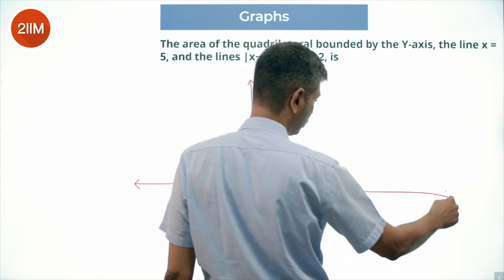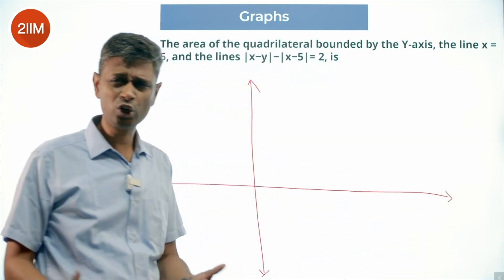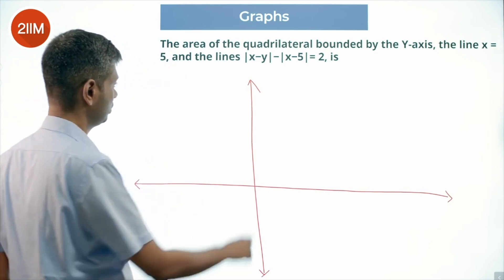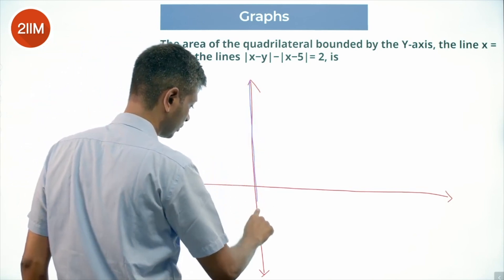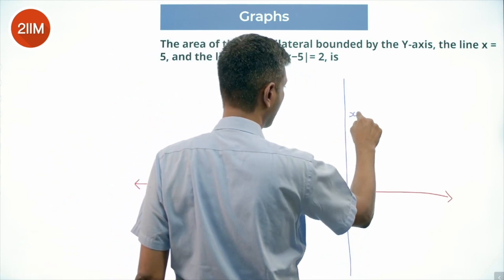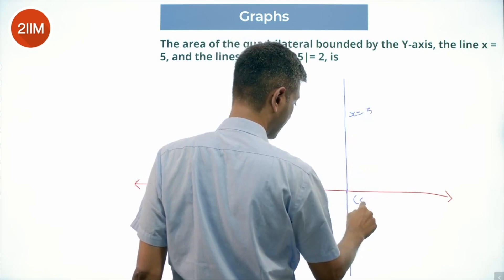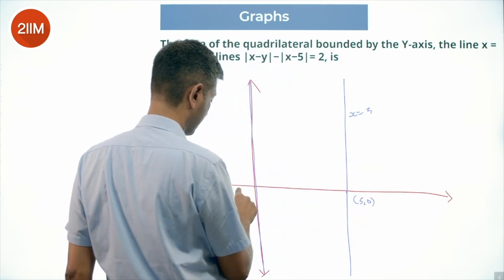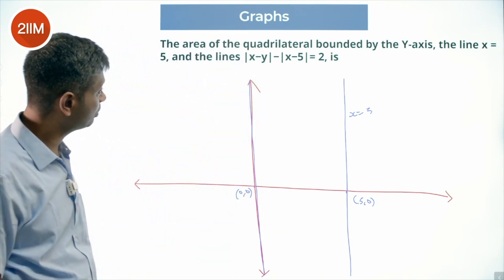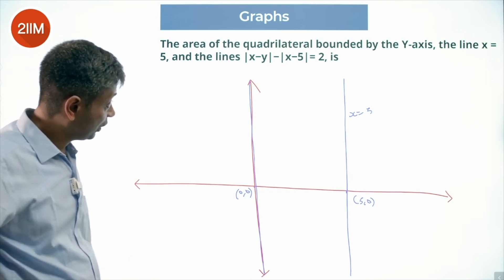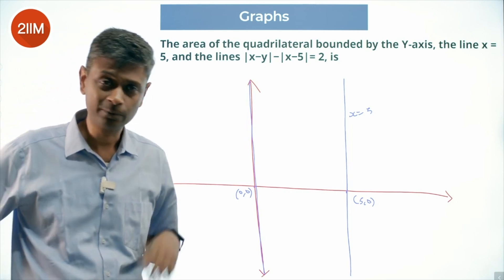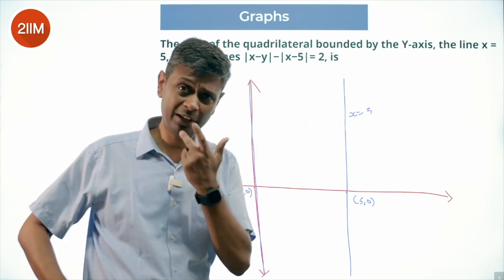I can sense that this is a set of linear equations — a bunch of lines. We have the y-axis and the line x = 5; these are two parallel tracks. The other line is |x - y| - |x - 5| = 2. I'm going to find where it cuts the x-axis, where it cuts the y-axis, and where it cuts x = 5.